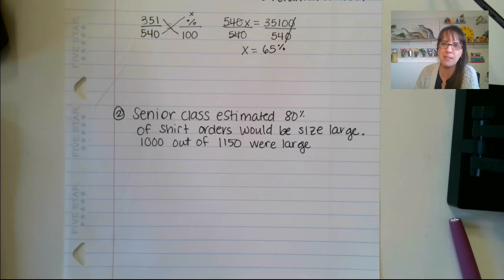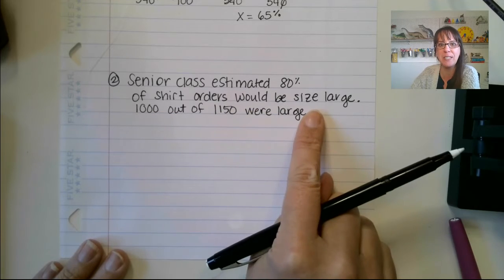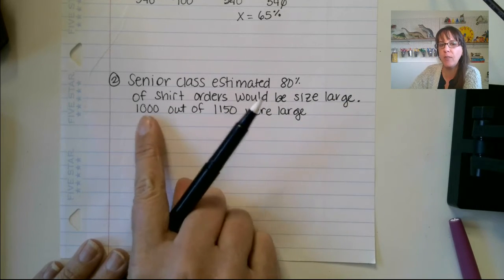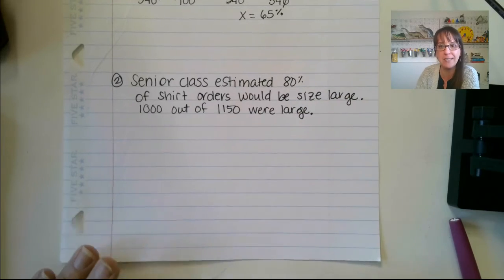Also return your books on time. All right. A senior class estimated 80% of the shirt orders were going to be a size large. 1,000 out of 1,150 were large. Is that a good estimate? Well, let's see.